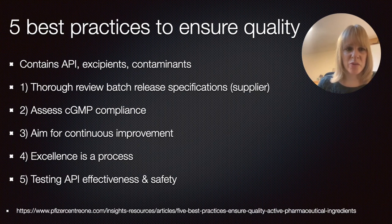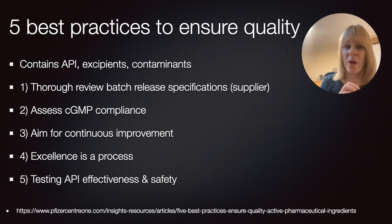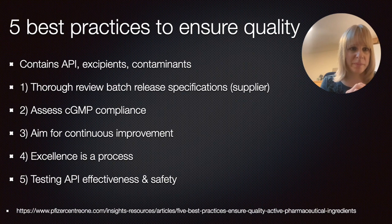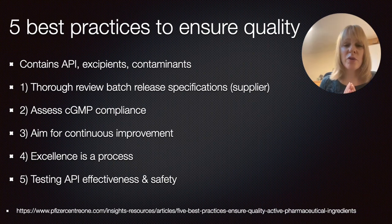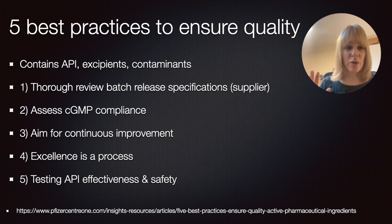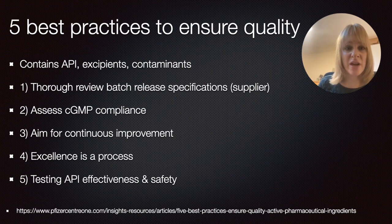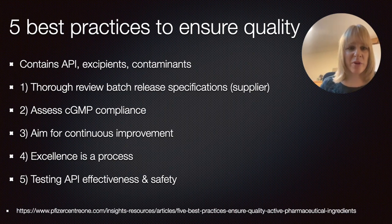The first thing to start with is your raw materials. You need to thoroughly review the batch release specifications from the supplier and check whether this is in compliance with CGMP — current GMP. In this process, you need to ensure that you always strive for continuous improvement, which is a critical aspect also described in the quality by design video. To produce products with high quality and safety, the whole process must be thoroughly followed, documented, and regularly controlled, because excellence in itself is a process. Finally, you need to test the API effectiveness, but also the safety of the overall product, considering the excipients and contaminants.